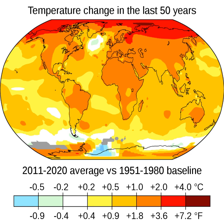While water vapour (about 50%) and clouds (about 25%) are the biggest contributors to the greenhouse effect, they increase as a function of temperature and are therefore feedbacks. On the other hand, concentrations of gases such as CO2 (about 20%), tropospheric ozone, CFCs, and nitrous oxide are not temperature-dependent and are therefore external forcings. Human activity since the Industrial Revolution, mainly extracting and burning fossil fuels — coal, oil, and natural gas — has increased the amount of greenhouse gases in the atmosphere, resulting in a radiative imbalance.